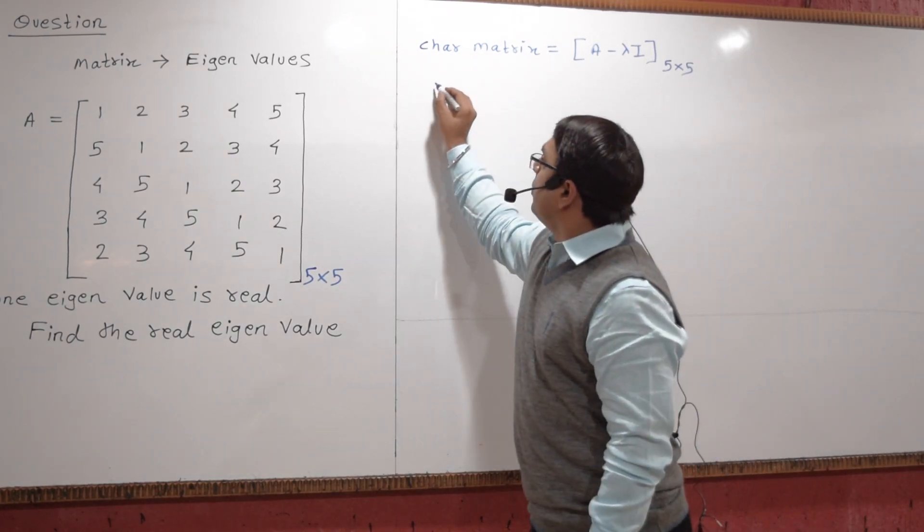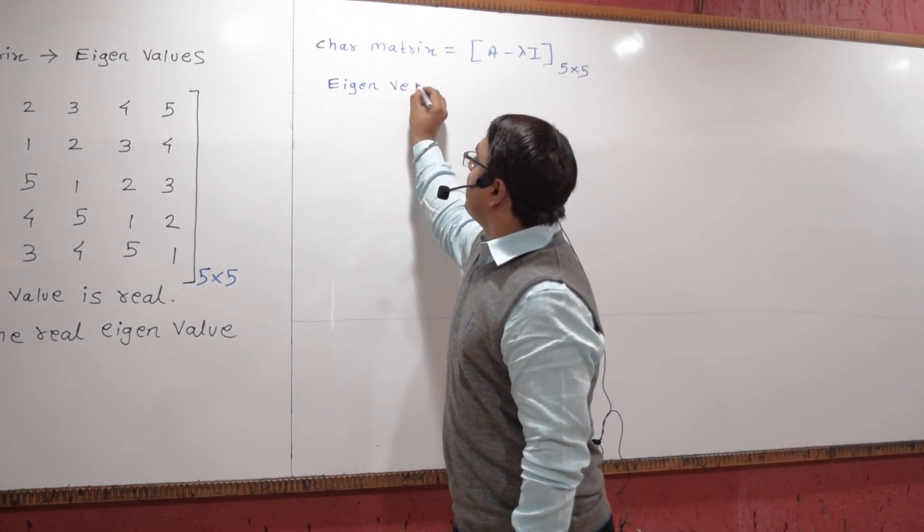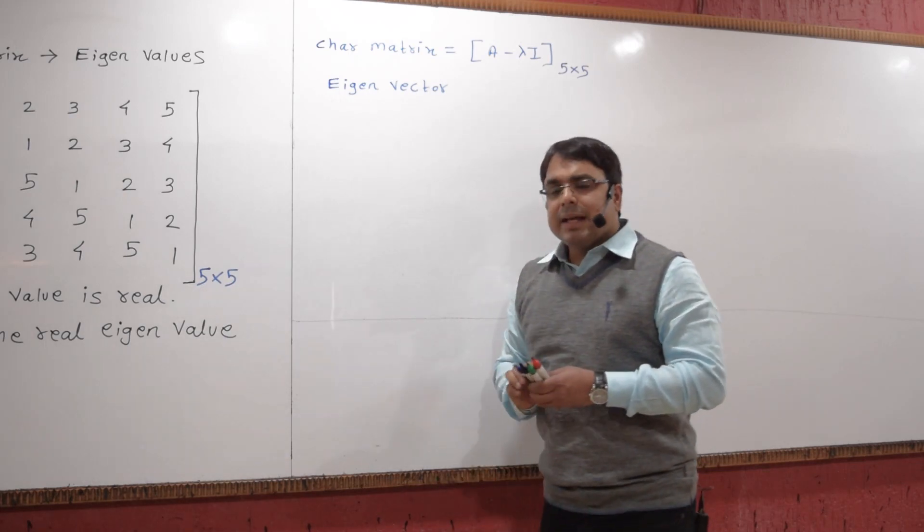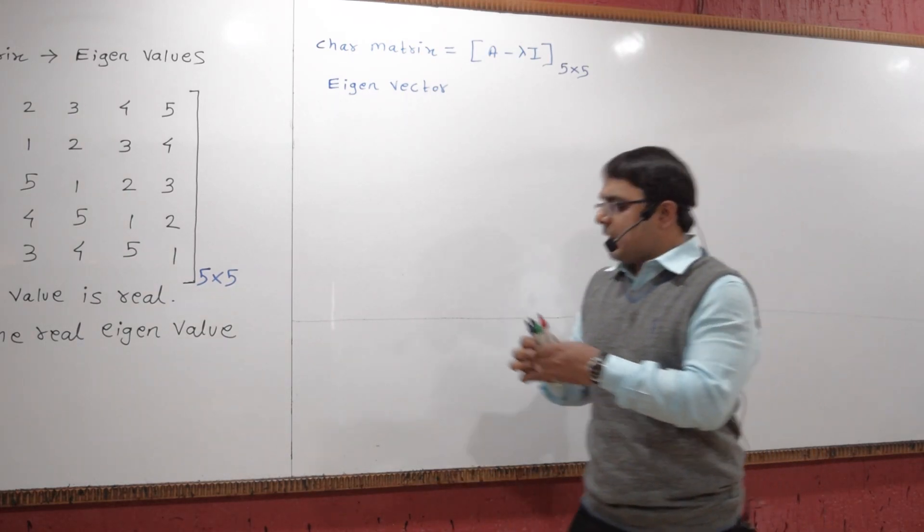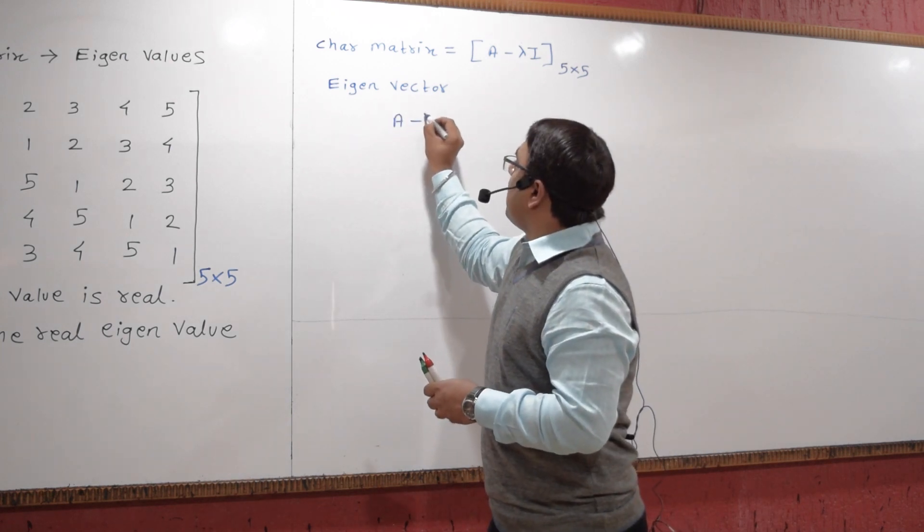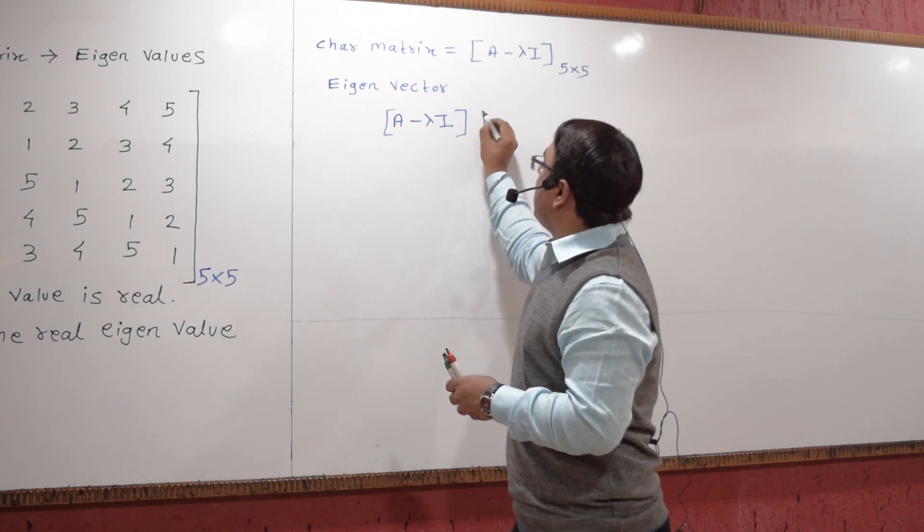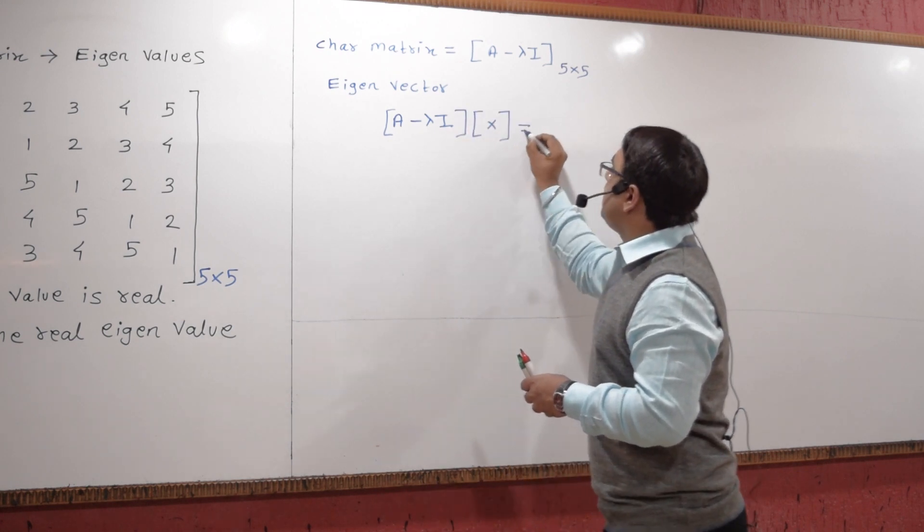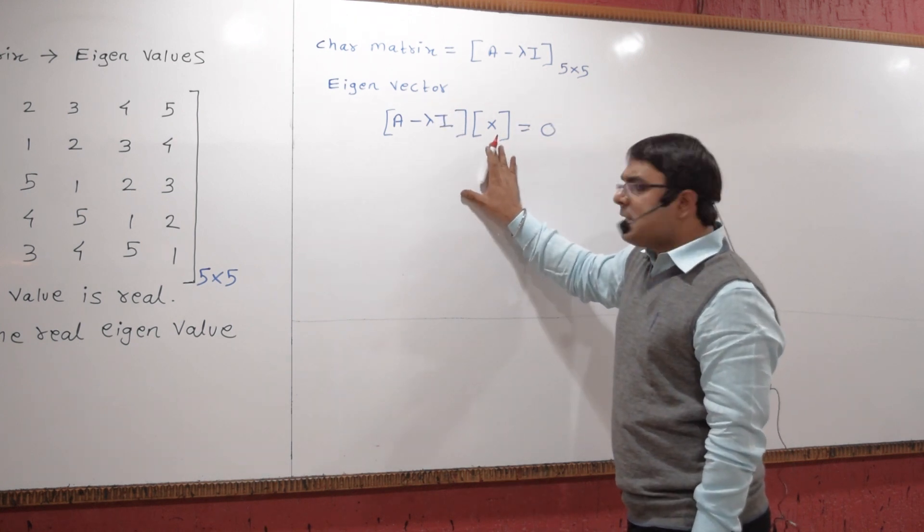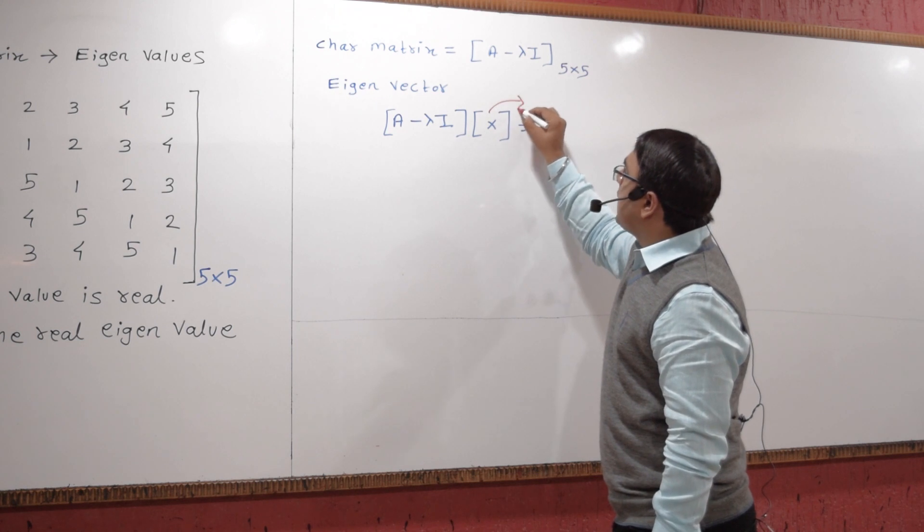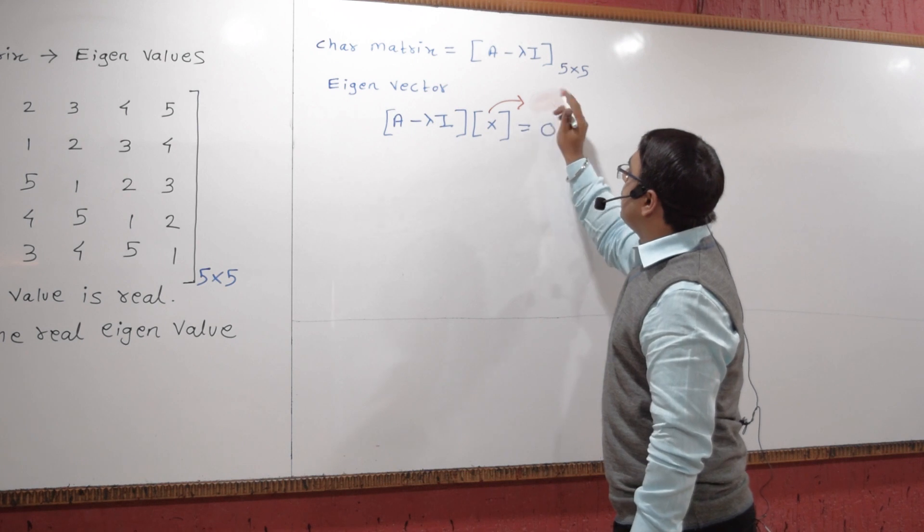Now we should know the basic definition of an eigenvector. An eigenvector is a vector which satisfies the given equation: (A minus lambda I) multiplied by matrix X is equal to 0. The matrix which satisfies this equation is called an eigenvector.